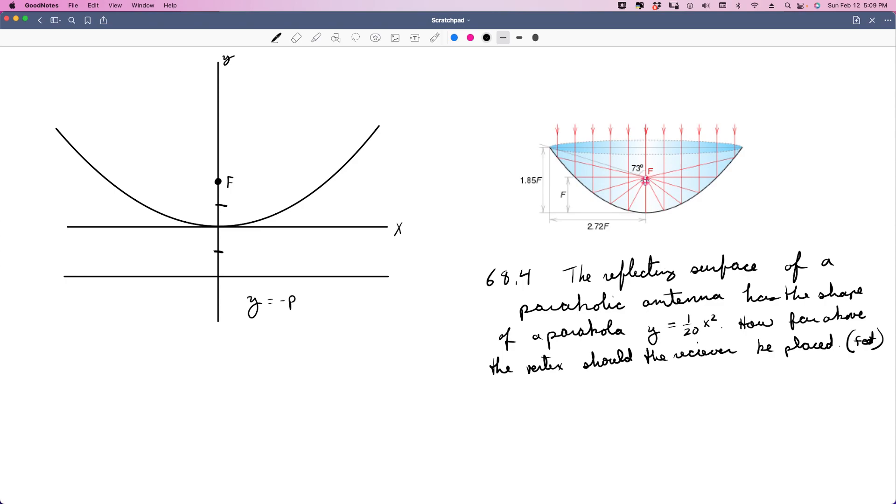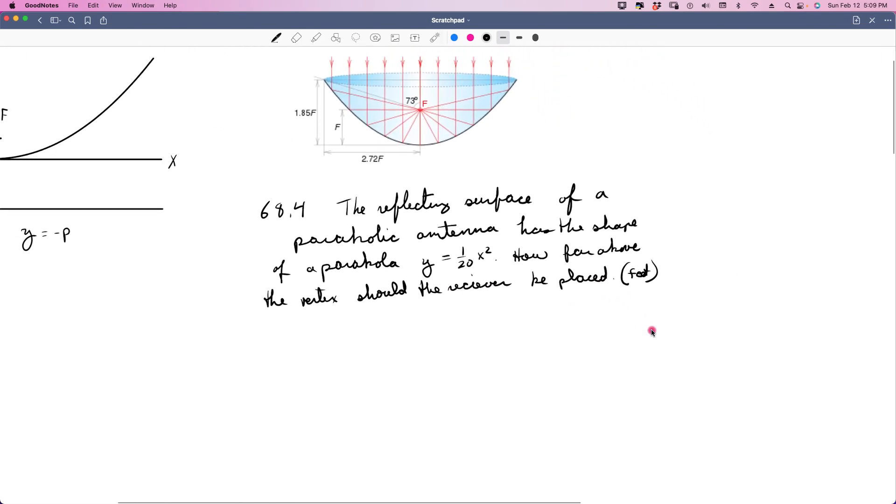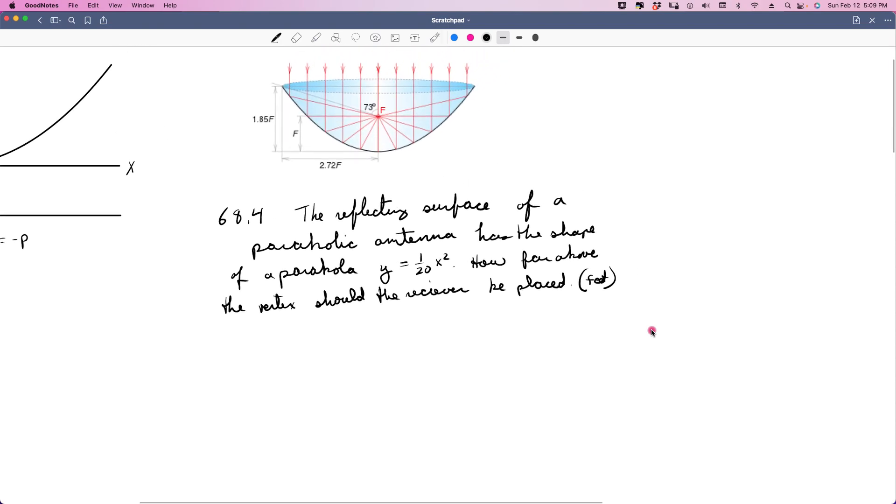So we can calculate where that focal point is based on the equation of the parabola. So let's look and see what 68.4 is asking of us. It says the reflecting surface of a parabolic antenna, we'll just pretend this is it, has the shape of a parabola y equals 1 over 20x squared. How far above the vertex, this is the vertex right here, should the receiver be placed and the dimensions are in feet.